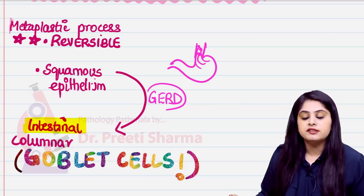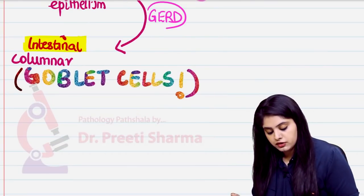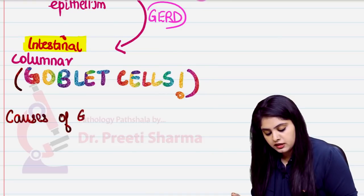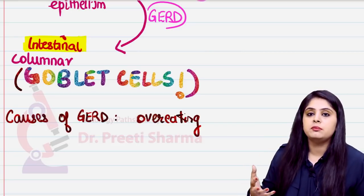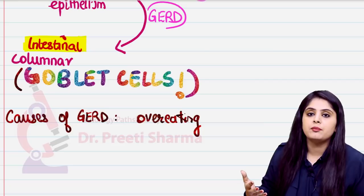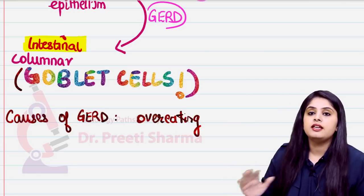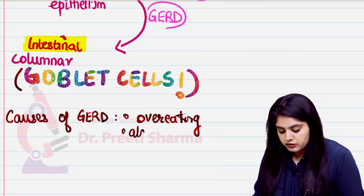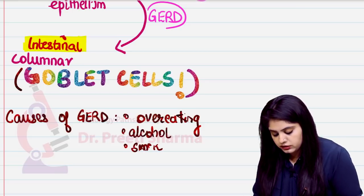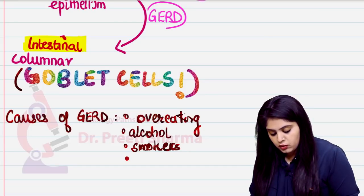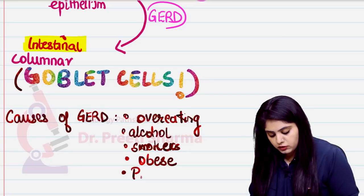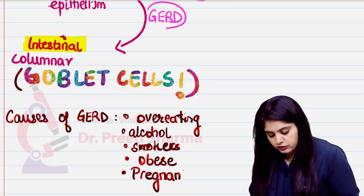What are the causes of gastroesophageal reflux disease? Number one is overeating — following a large meal, especially at night during sleep, you may feel regurgitation, which is GERD. Other causes include alcohol intake, smoking, obesity, and pregnancy.